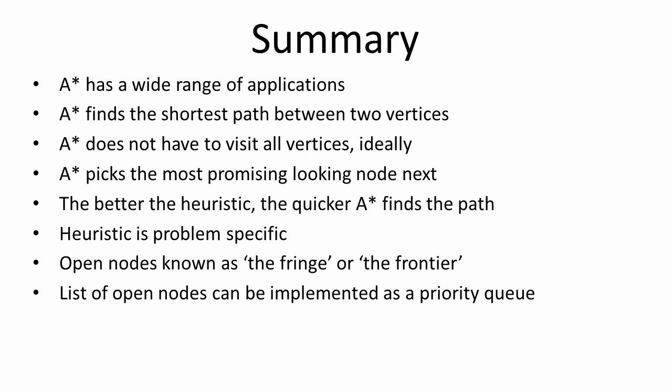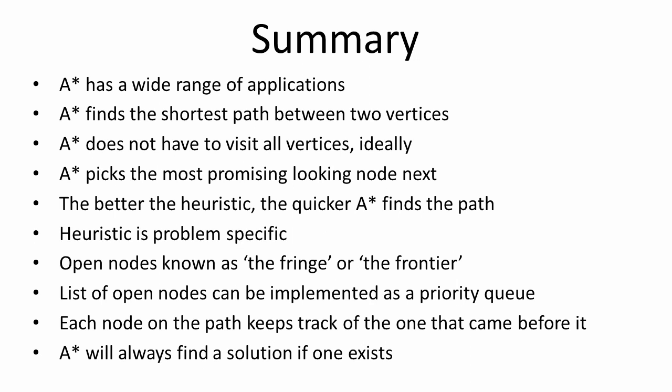The list of open nodes can be implemented as a priority queue. This can be a significant enhancement, because remember, we need to select the one with the lowest F value. If they're in some sort of order, that can help. Each node on the path keeps track of the one that came before it. And A-star will always find a solution if one exists.